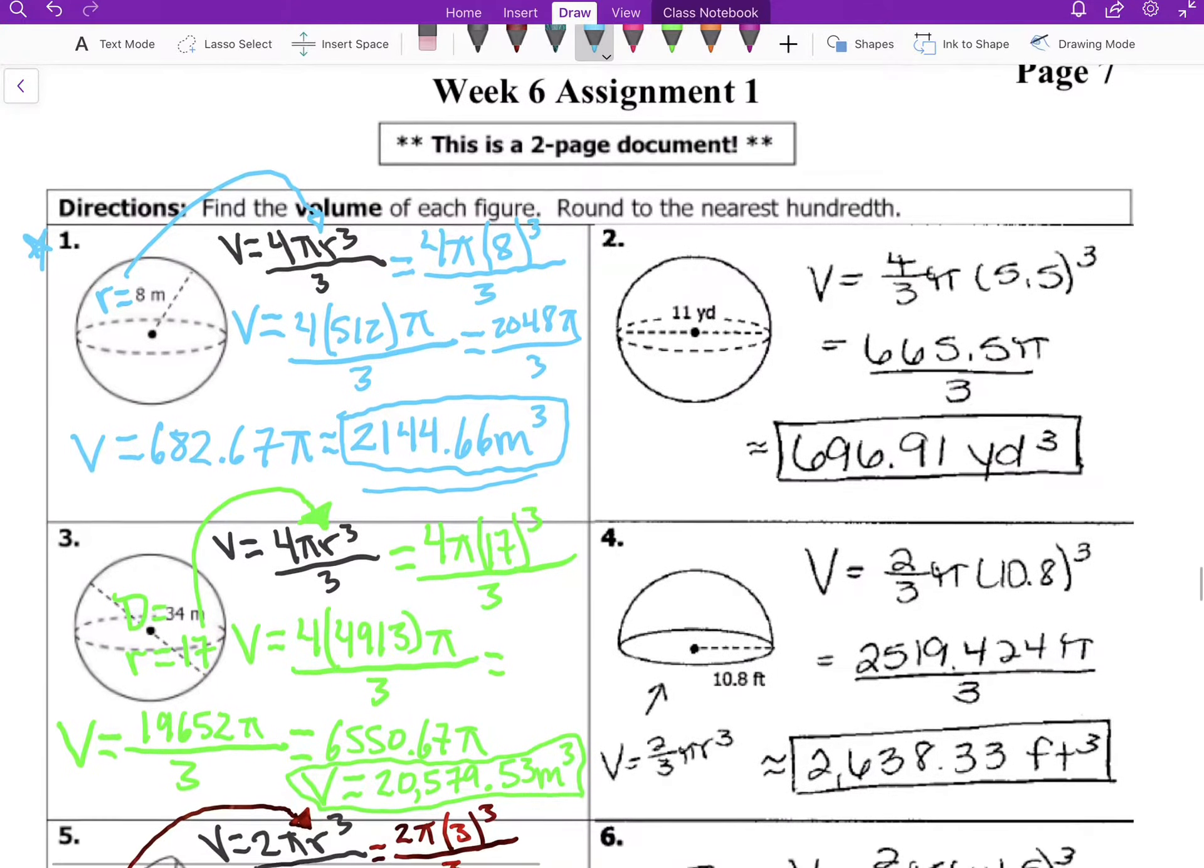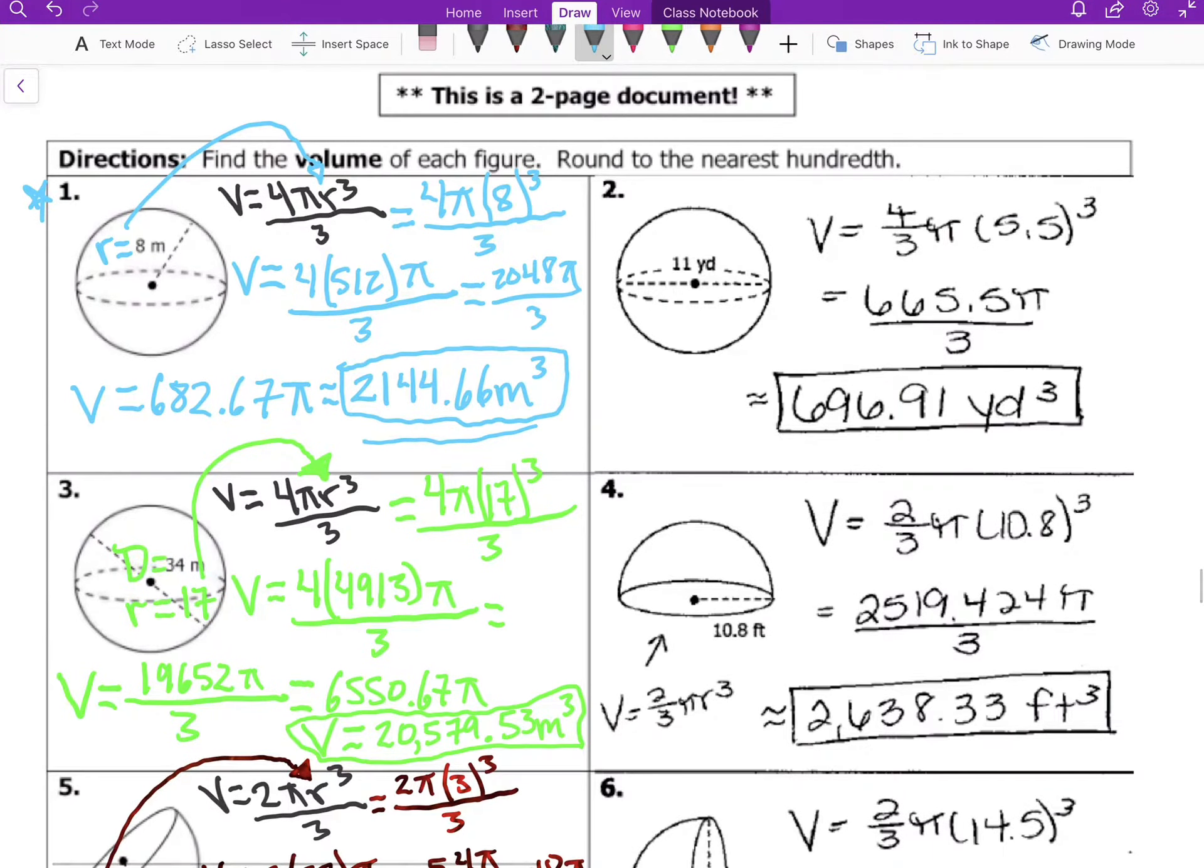Number three, it's the same steps, just you're doing one more extra step and that's finding the radius. You're given the diameter so you're dividing by two. Half of 34 is 17, and then we plug in 17.